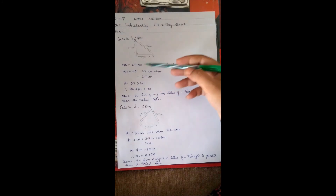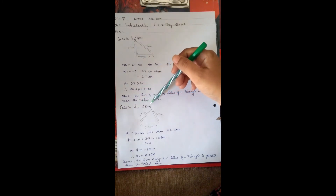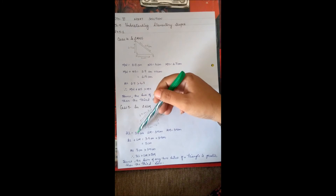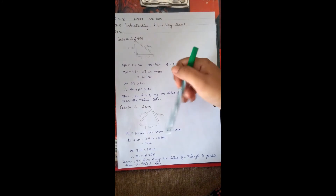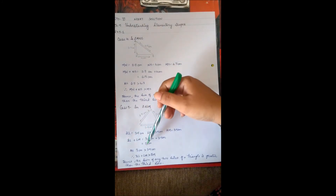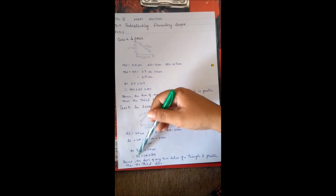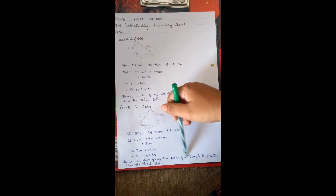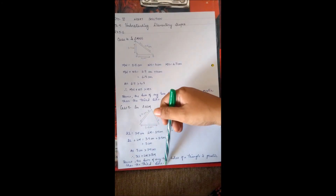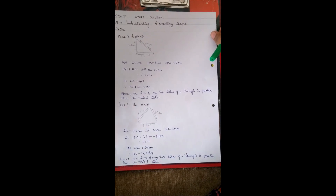Case 5 — Triangle KLM: KL = 3.75 cm, LM = 3.5 cm, KM = 3.5 cm. KL + LM = 7 cm, which is more than 3.5 cm. Therefore KL + LM > KM. Hence the sum of any two sides of a triangle is greater than the third side. These are the five cases for exercise 5.1 of chapter 5, Understanding Elementary Shapes, Class 6 NCERT.